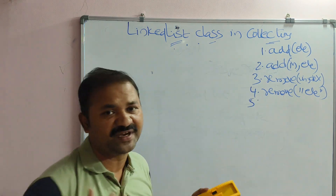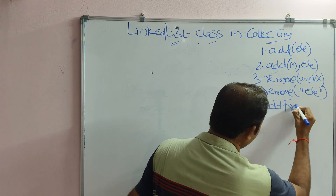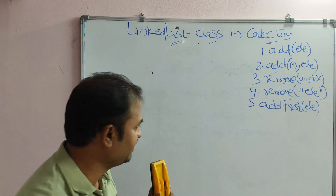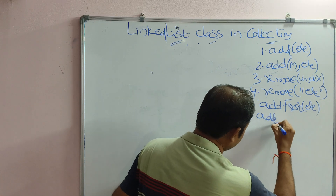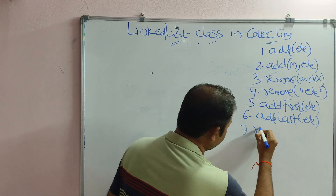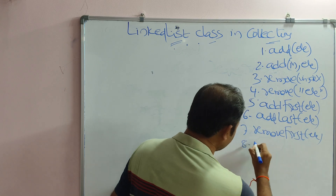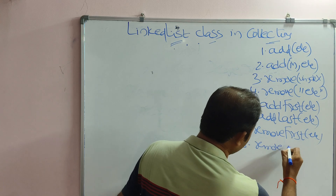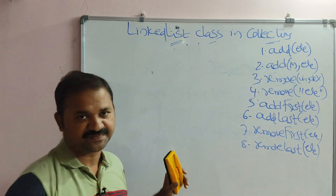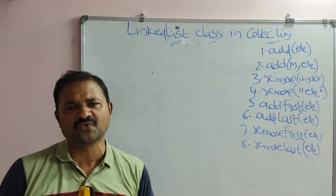Now let us look at some methods from the Deque interface. We have addFirst(), which adds an element at the first position — the beginning. Next, addLast(), which inserts the element at the last position. Then removeFirst(), which removes the first element, and removeLast(), which removes the last element. These four are the methods of the Deque interface, and since LinkedList implements Deque, we can use all of them.